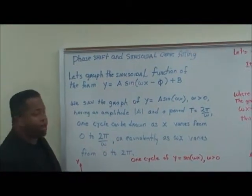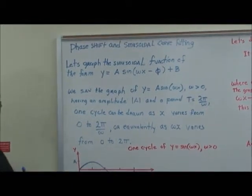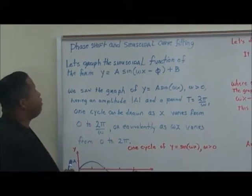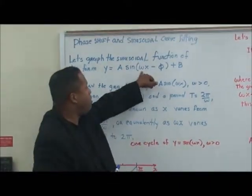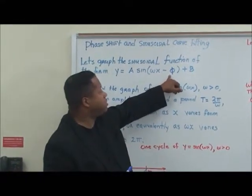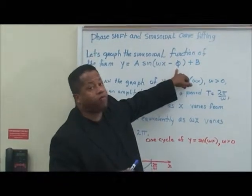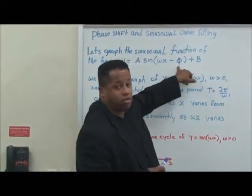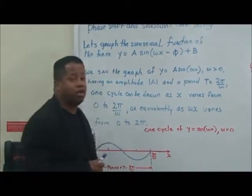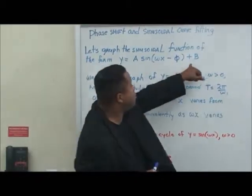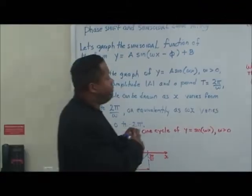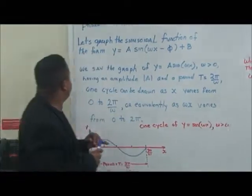Let's talk about a particular problem. We want to graph the sinusoidal function of the form y equals A times sine of (ωx minus φ) — φ is pronounced as 'phi' or 'fee' — plus B, which is the vertical shift in the graph.